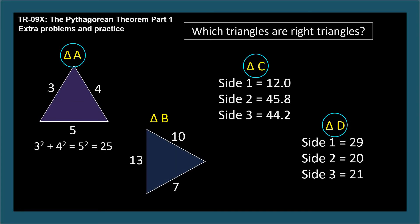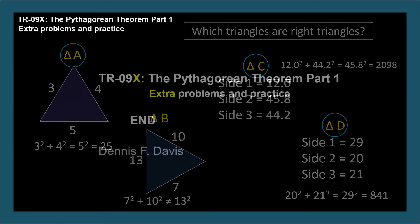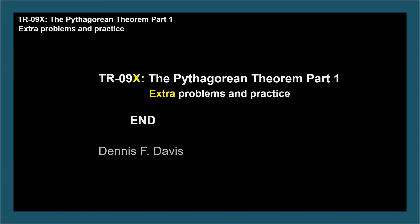For triangle a: 3² + 4² = 5², which is 25 — the equation is true, so it's a right triangle. For triangle b: 7² + 10² ≠ 13², so it is not a right triangle. For triangle c: 12² + 44.2² = 45.8², both rounding to 2098, so triangle c is a right triangle. For triangle d: 20² + 21² = 29², which is 841 — since the Pythagorean theorem holds, triangle d is also a right triangle.